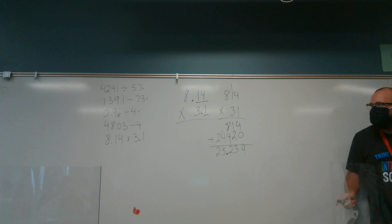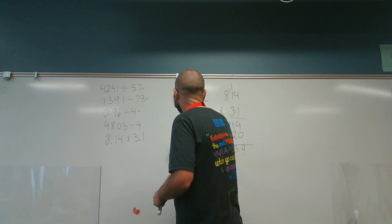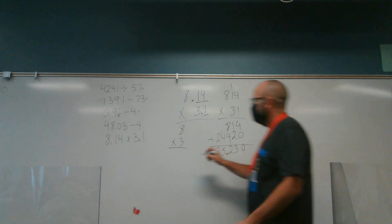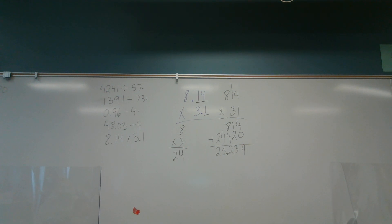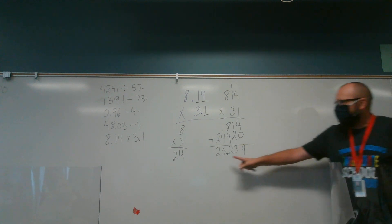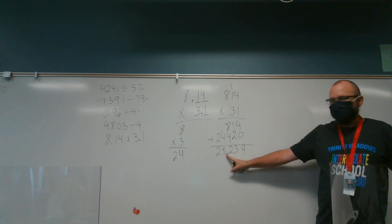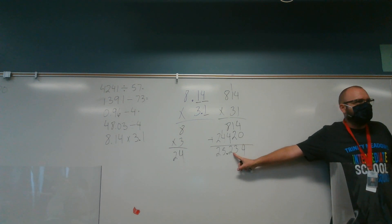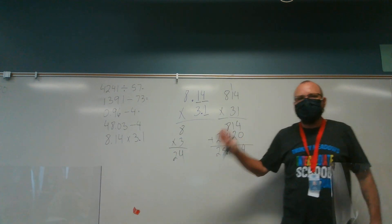Now, if I want to make sure my answer makes sense, if I just multiplied my whole numbers, what's 8 times 3? 24. So if I just multiplied my whole numbers, I'd get 24. Now, if I put my decimal point here, I'd get 2. Is 2 close to 24? No. 25 close to 24? Yes. Now, if I put my decimal point here because I wasn't sure where to put it, I would get 252. Is that close to 24? No. So use the estimation. That will help you also place the decimal point. Thank you.